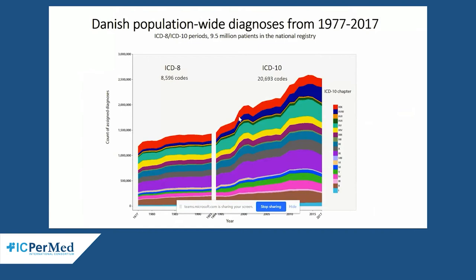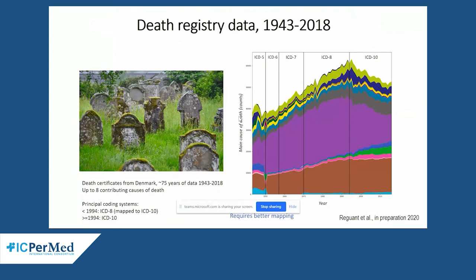Studying longitudinal patterns of disease development requires backwards compatibility across coding standards. Death registries are among the oldest, going back to ICD-5 and ICD-6, and we've looked at how causes of death develop over time. The main point is that to study longitudinal patterns we need to work across standards that were implemented many years ago, and this must also be considered when collecting data prospectively.